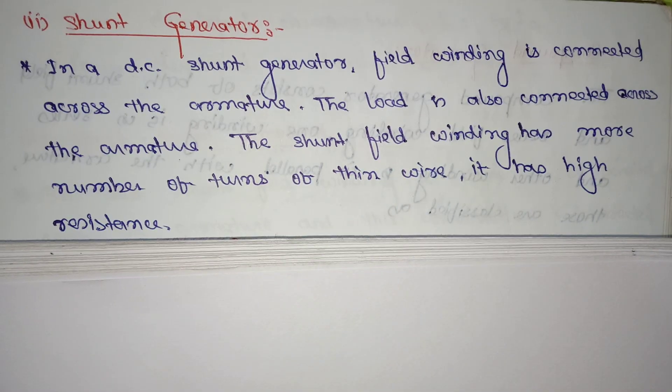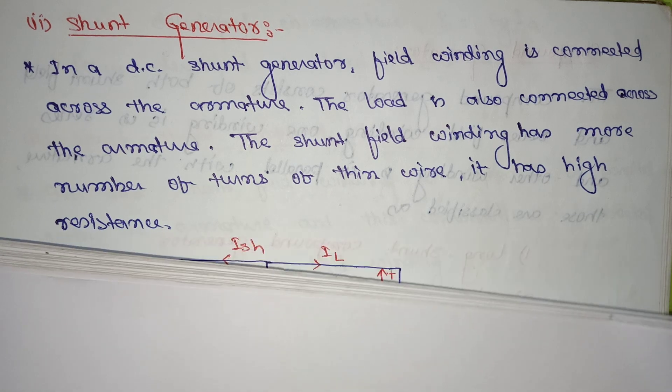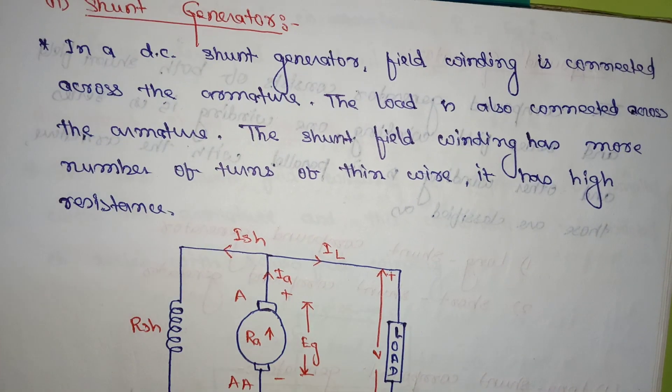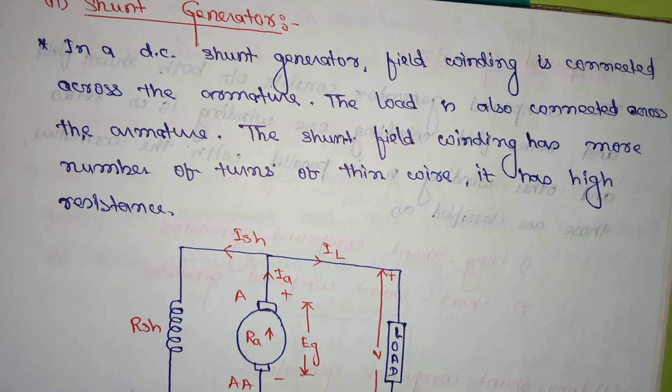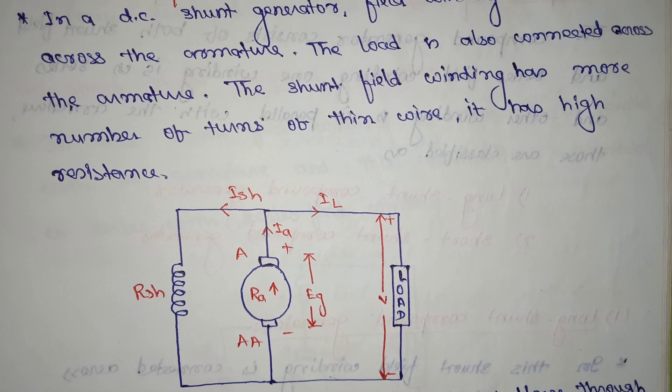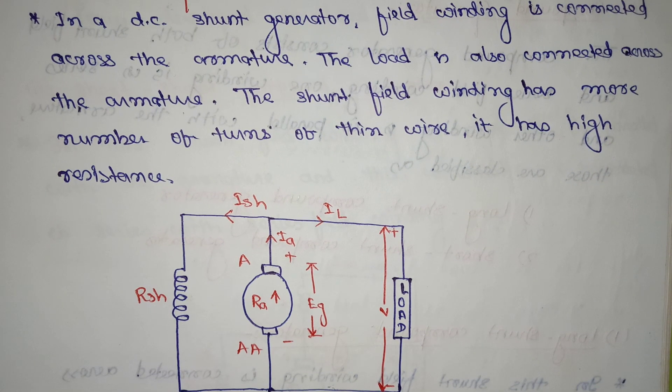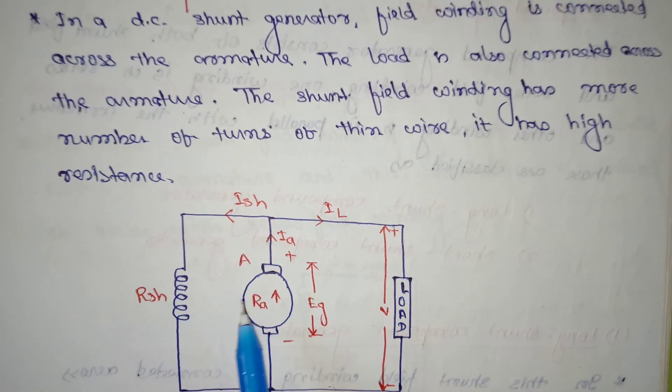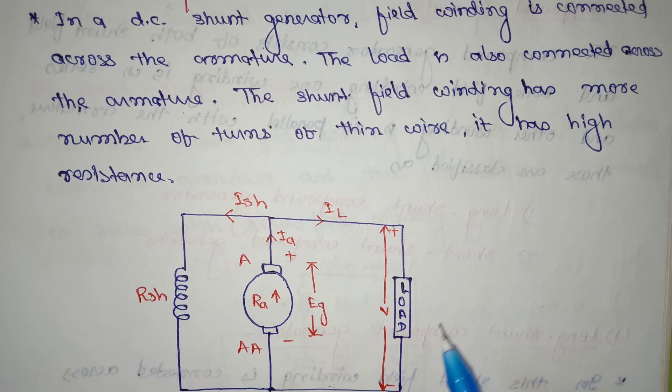Let's see the diagram. This is the shunt generator diagram. As I already told in the definition, the field winding is connected across the armature, and the load is also connected across the armature.